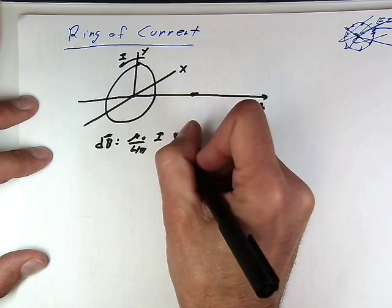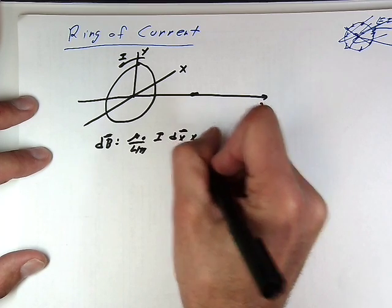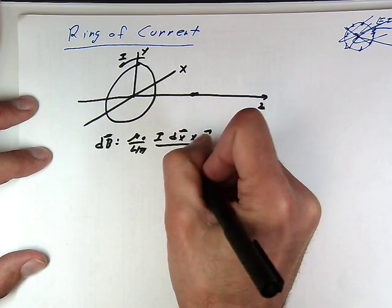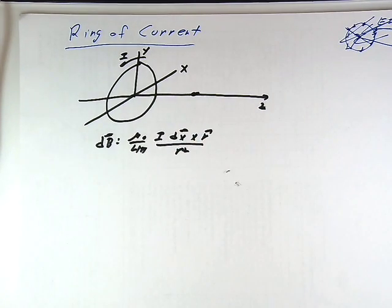And we had a current here, we had a dx crossed into r hat vector over r squared, something like that. That's the differential form of the Biot-Savart law. We saw it in class last time.